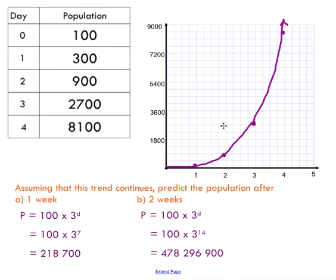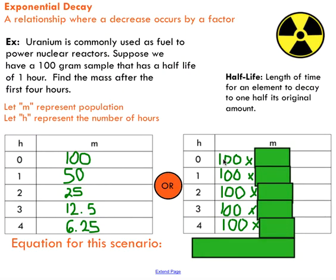Okay, so that's just an example of something we call exponential growth, which is when we multiply by a factor. It makes sense here to talk about exponential decay. This is a relationship where you decrease by a factor. A great example is half-life, which is the length of time it takes for something to decay to one half of its original amount. You see this with radioactive material and radioactive waste.